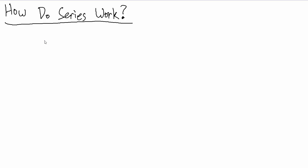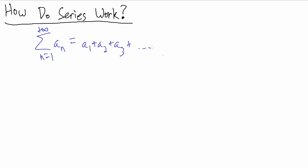When you're first starting out with sequences and series from a calculus point of view, you might be wondering: how can we actually add up infinitely many numbers and still get something finite? So if we say the sum from n equals 1 to positive infinity of a sub n — a sub 1 plus a sub 2 plus a sub 3 plus dot dot dot — how do we actually get something finite out of this?